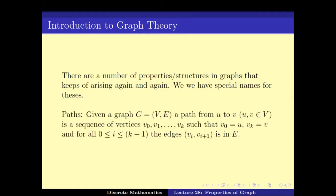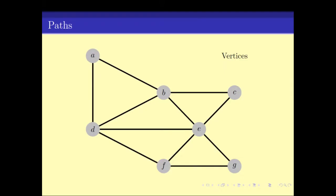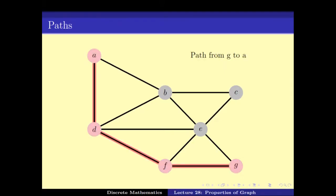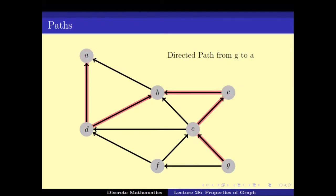A path from u to v is a sequence of edges starting from u and ending at v such that any consecutive pair of vertices has an edge between them. For example, g-f-d-a is a path, and g-e-c-b-d-a is also a path. If the graph is directed, we need a directed path — meaning all edges must go in the correct direction. For instance, g-e-c-b-a is a directed path from g to a, but g-e-c-b-d-a is not if the edge between b and d is in the wrong direction.